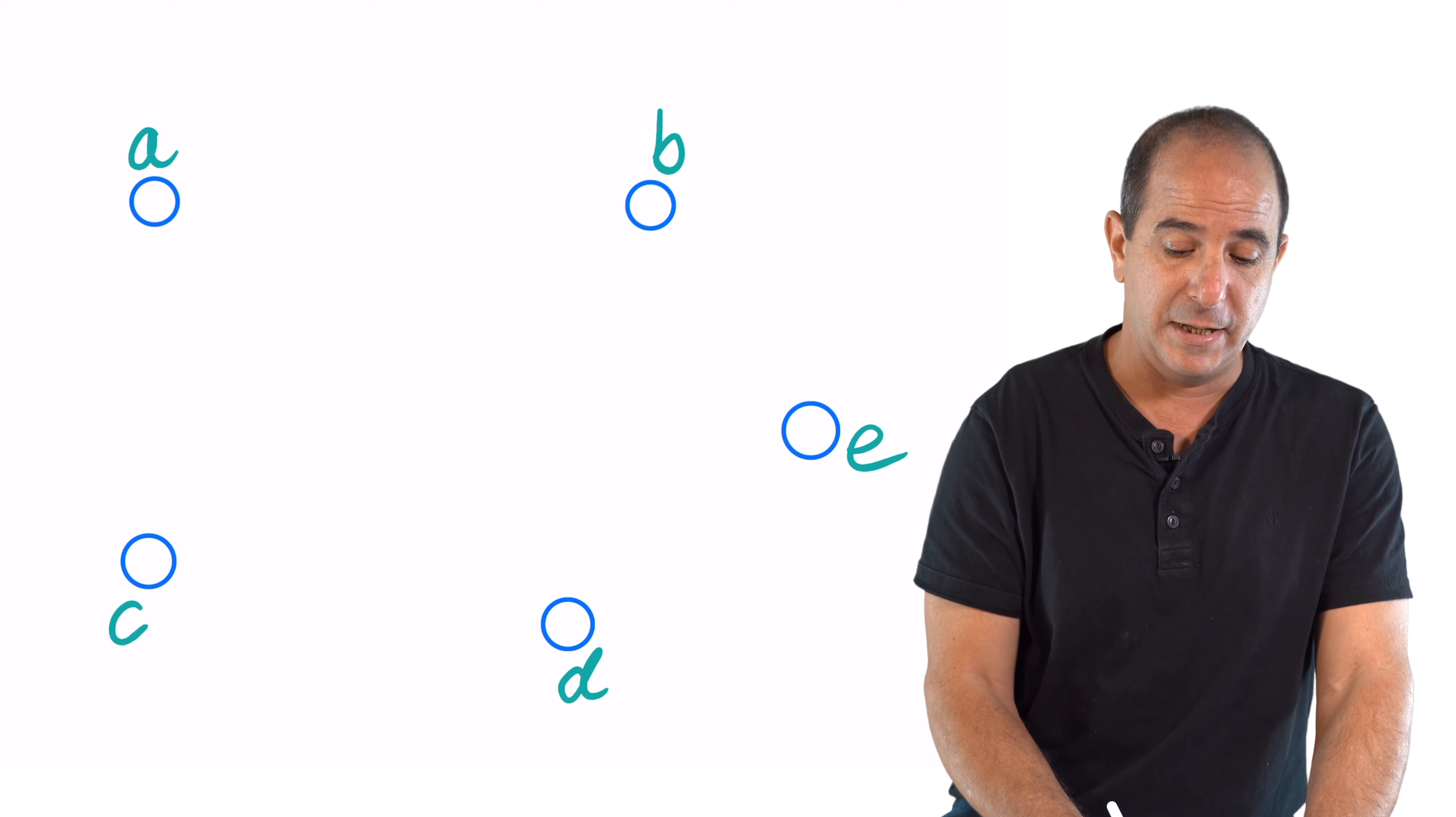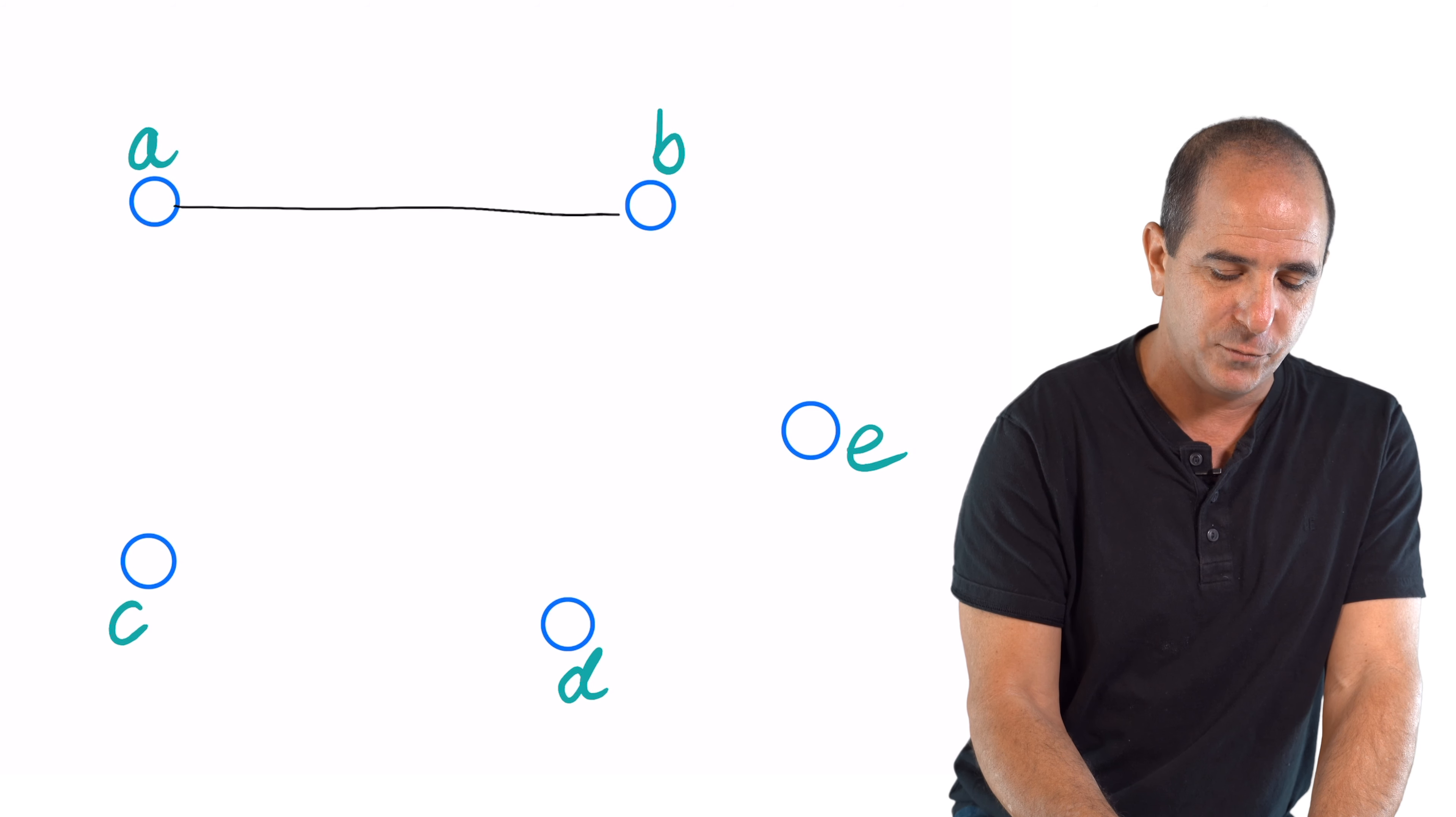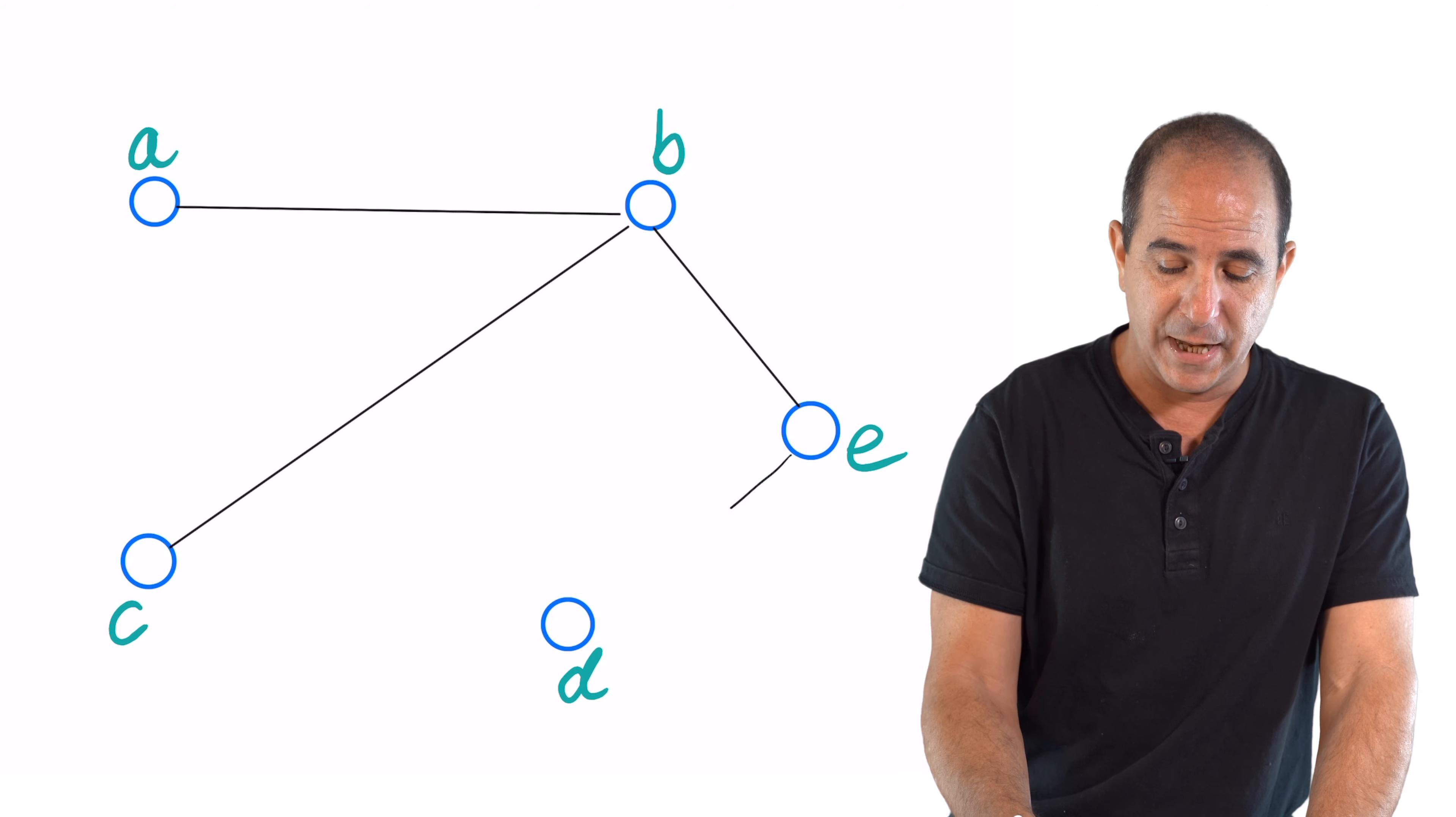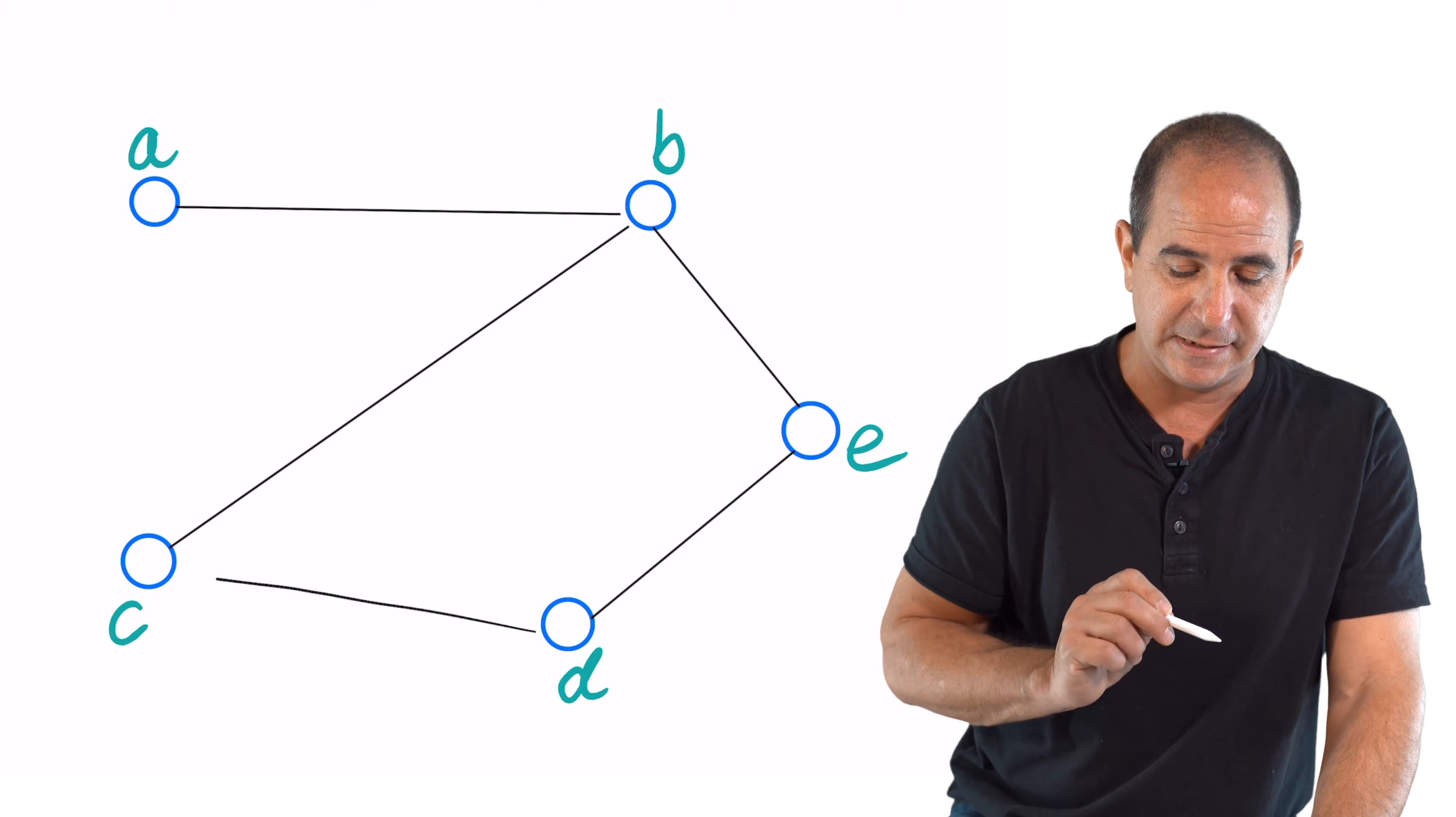And a road will be defined formally as an edge. So I can go from A to B, and from B to C. And from B, I can also go to E. And from E, I can go to D and C.